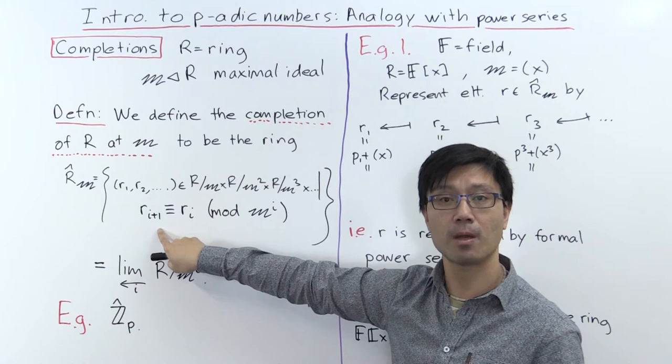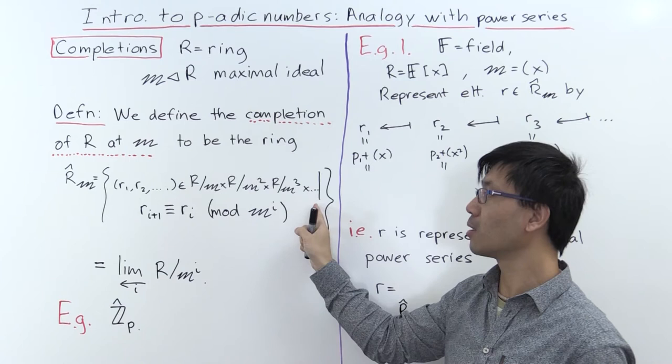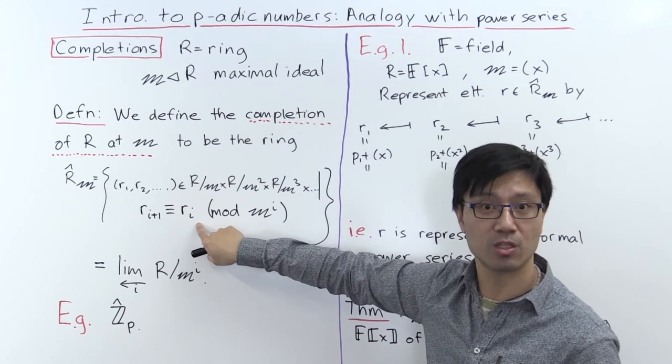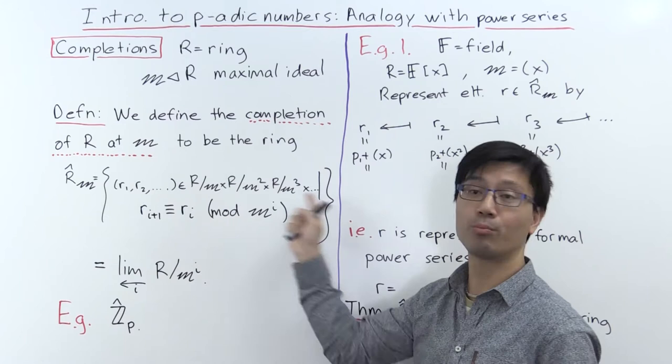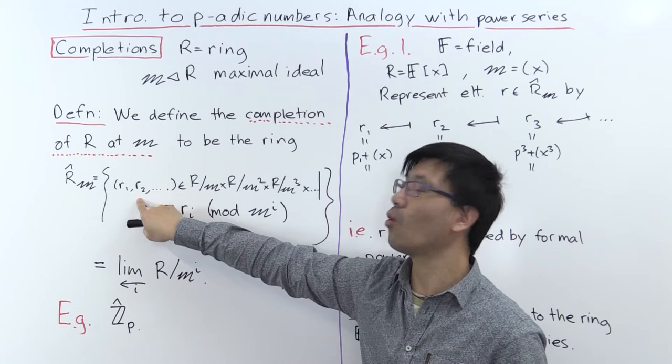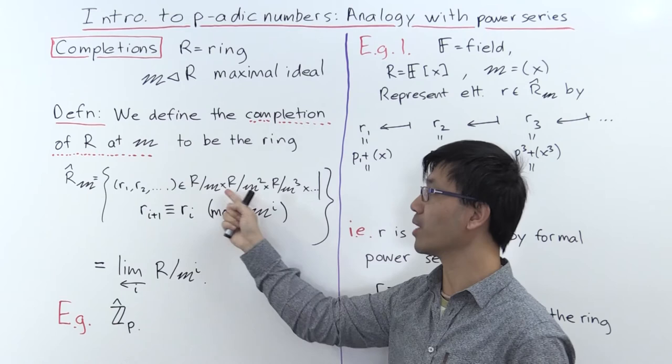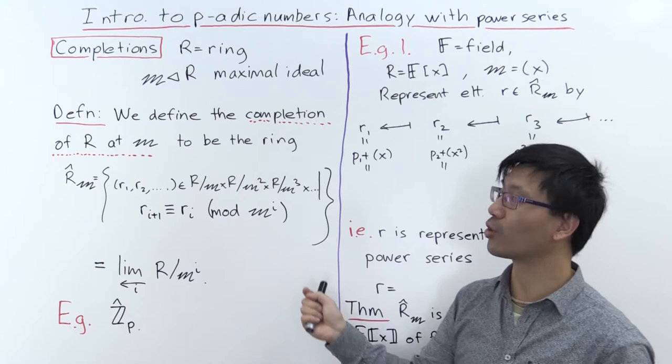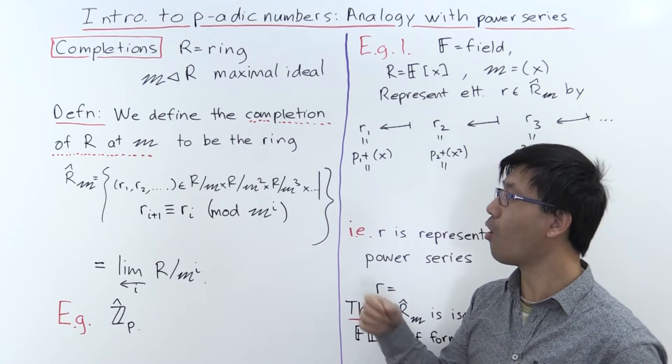The tuples are not arbitrary. The i-plus-first term — some residue class modulo M to the i plus one — when you reduce it modulo M to the i, must be the same as the previous term R_i. So here you have an infinite product of rings, which is itself a ring, and this is going to be a subset. This condition makes it closed under addition, making it a subring.